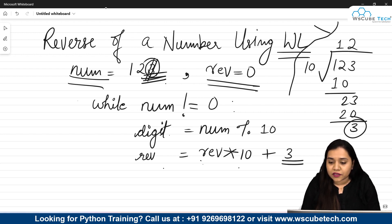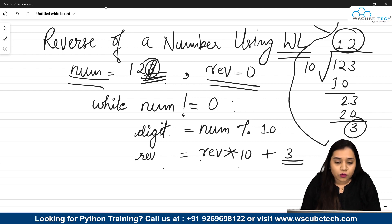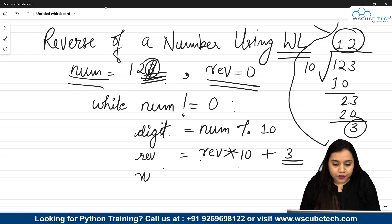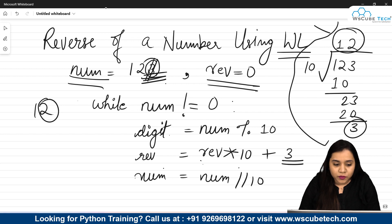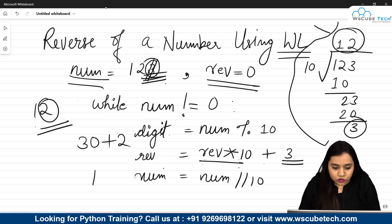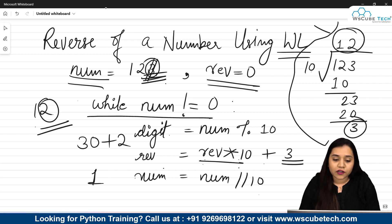After each iteration, we eliminate the last digit from the number using floor division: number equals number floor division 10. This gives us the quotient — for 123 divided by 10, that's 12. Now the number is 12. The iteration repeats: divide by 10 to get remainder 2, reverse becomes 32 times 10... wait, 3 times 10 plus 2 equals 32, and floor division removes the 2 leaving 1. The while loop condition continues while number is not equal to 0.